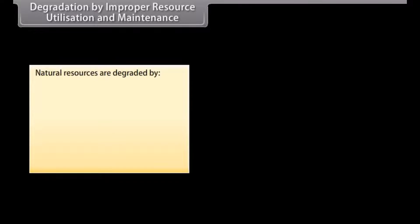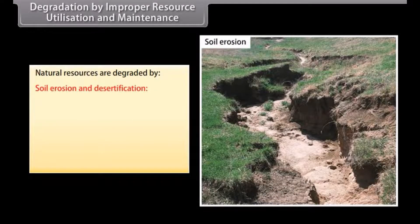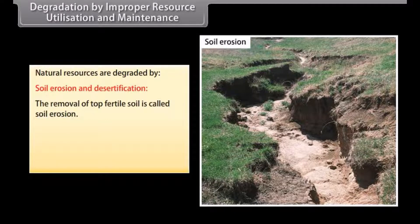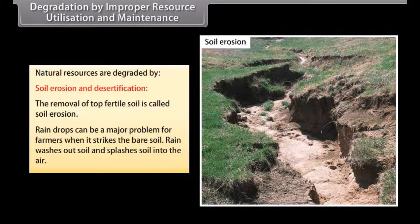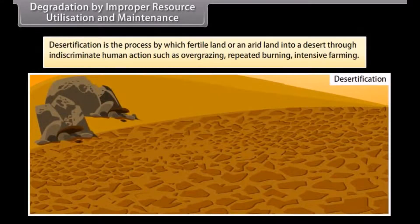Natural resources are degraded by soil erosion and desertification. The removal of top fertile soil is called soil erosion. Raindrops can be a major problem for farmers when they strike bare soil, washing out and splashing soil into the air. Desertification is the process by which fertile or arid land turns into desert through indiscriminate human actions such as overgrazing, repeated burning, and intensive farming.